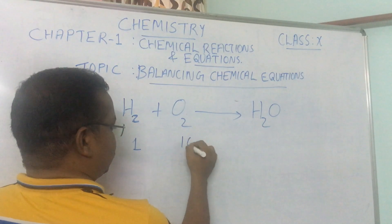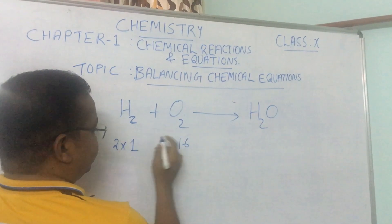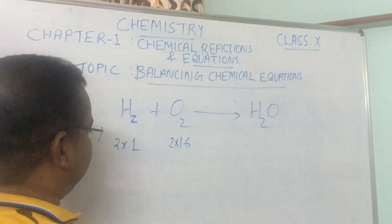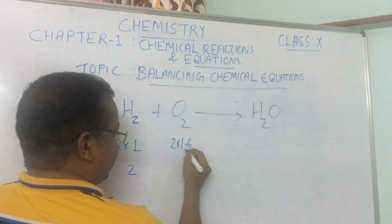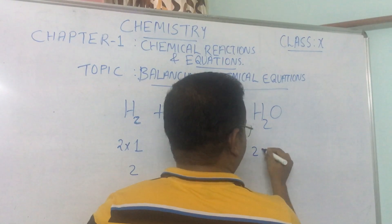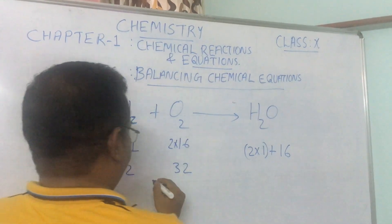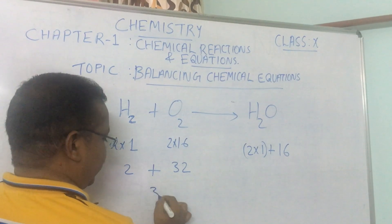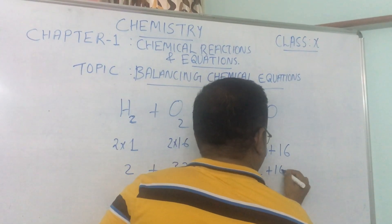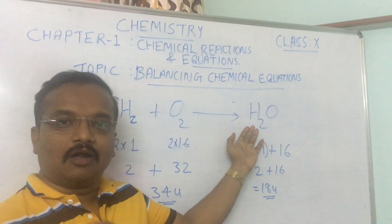From a mass point of view, the atomic mass of hydrogen is 1 and the atomic mass of oxygen is 16. On the left hand side: two atoms of hydrogen give 2 × 1 = 2, and one molecule of oxygen gives 2 × 16 = 32, totaling 34u. On the right hand side for one H₂O molecule: two atoms of hydrogen = 2 × 1 = 2, plus one atom of oxygen = 16, totaling 18u.